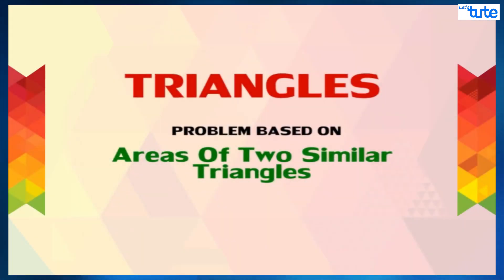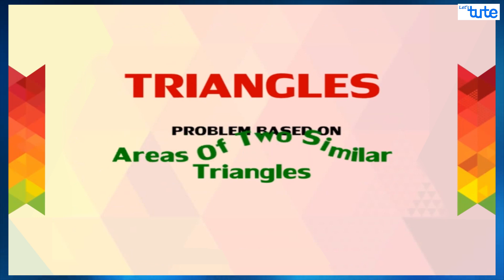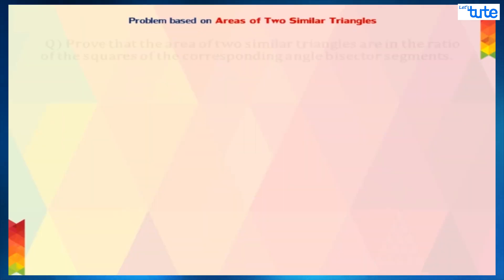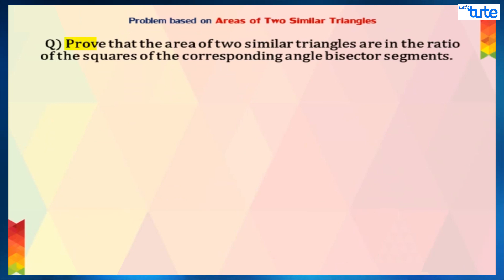Hi, in this video we are going to solve a problem based on the areas of two similar triangles. We are asked here to prove that the area of two similar triangles are in the ratio of the square of the corresponding angle bisector segments.